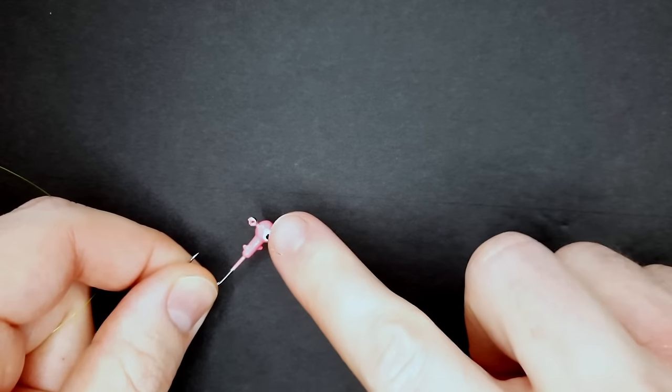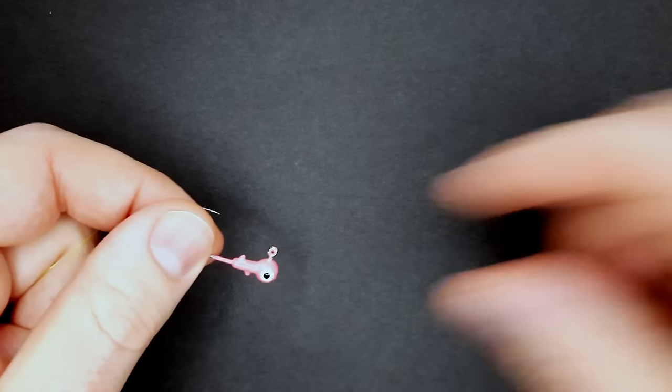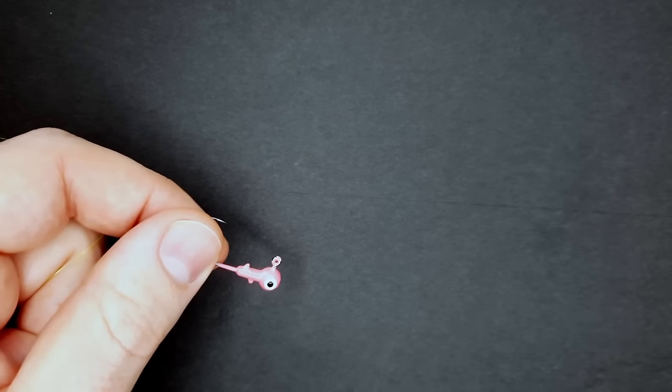First, you want to inspect your jig. Look at the eyelet. If that eyelet is not closed all the way, sometimes when they manufacture these eyelets they're not closed.